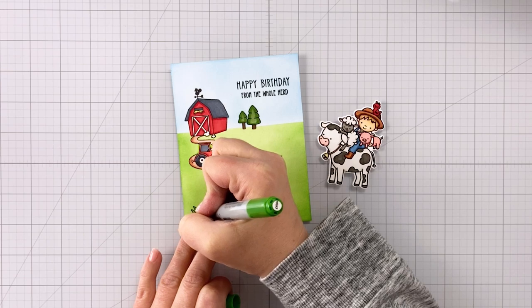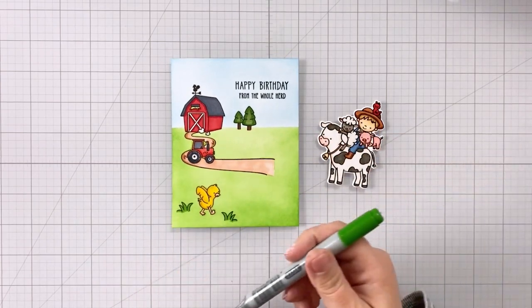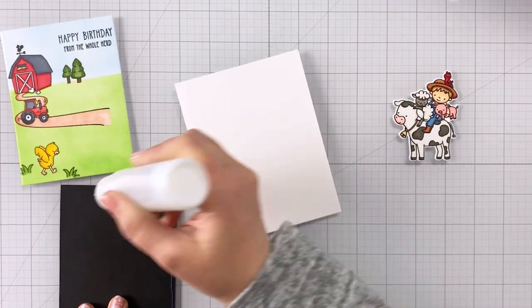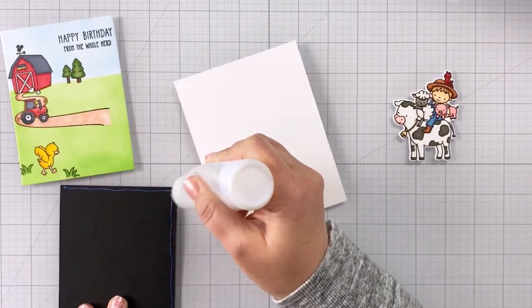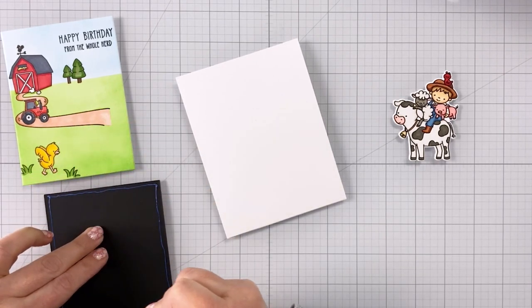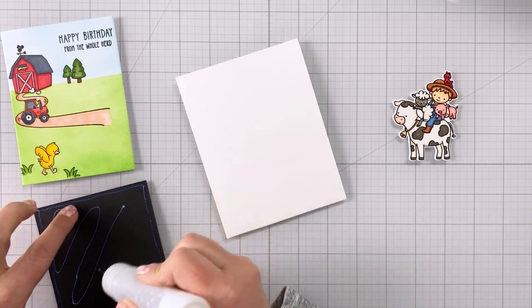Now, keep in mind, I did use Distress Ink, which is a water-based dye ink so that you can Copic color over. You don't want to Copic color over a hybrid or a pigment ink. So just make sure you are using a water-based dye ink if you're going to be coloring over it.